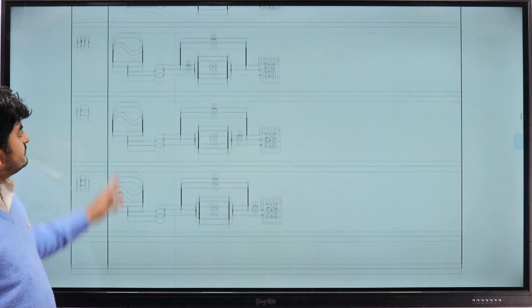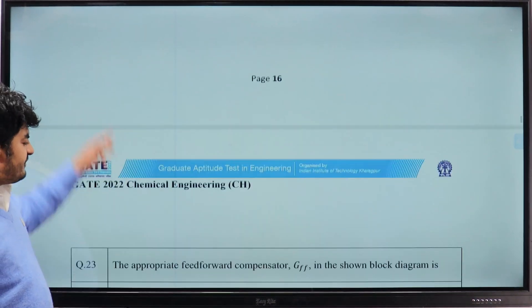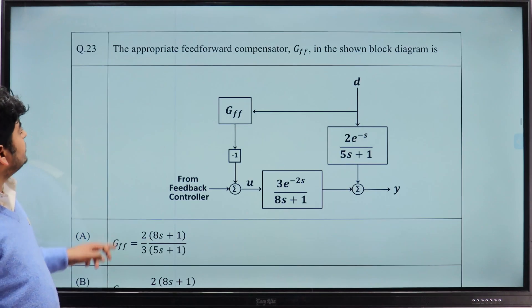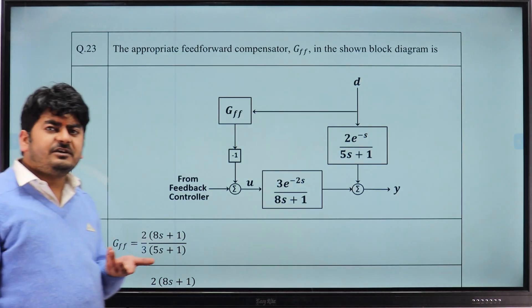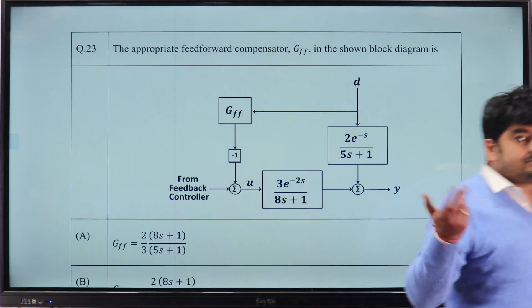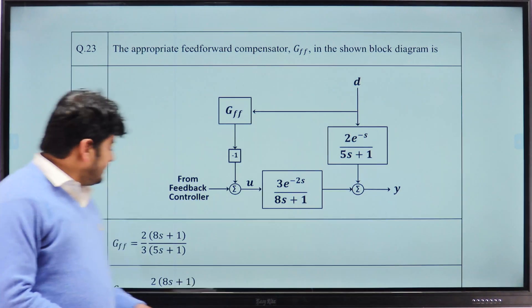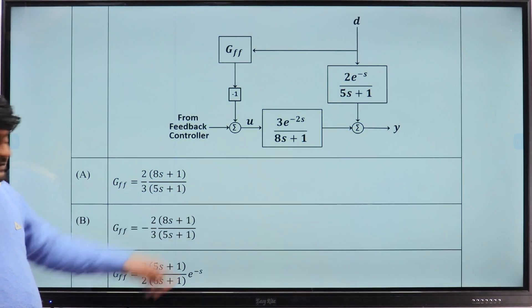You can see the option by yourself in case you have the shuffled options. For question 23 from feedforward controller, the most important concept from PDC from past seven, eight years if you see, option A is the correct answer.